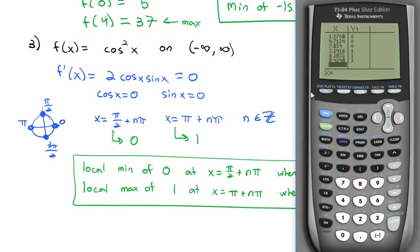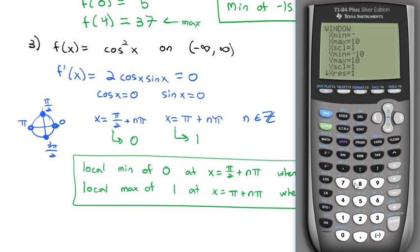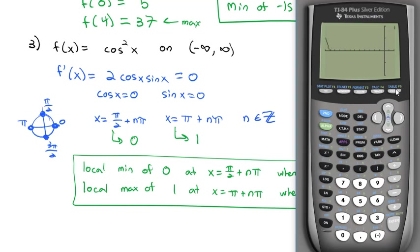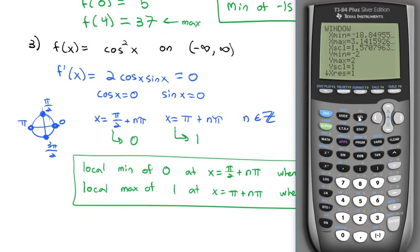Just to visualize what's happening, if we graph this and adjust the window — going from negative 6pi to pi, labeling every pi over 2, with a y-range of negative 2 to 2 — you can see that every pi over 2 there's either a local min or a local max, with heights of 0 and 1, just as we found.